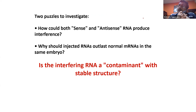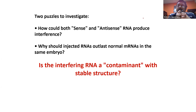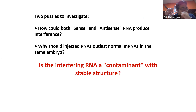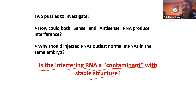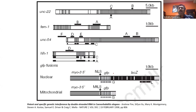In a Cold Spring Harbor meeting around 1995, Andrew Fire and Craig Mello met. They asked themselves: how could both the sense and antisense RNA produce interference? And RNAs are generally not known to have a very long half-life, but these injected RNAs seemed to be outlasting the life of normal RNAs. So they came up with the idea: is the interfering RNA a contaminant with a stable structure? Like, it is not really the sense or antisense RNA being injected, but some contaminant responsible for this interference — a contaminant with a stable structure. So they designed their own experiments.